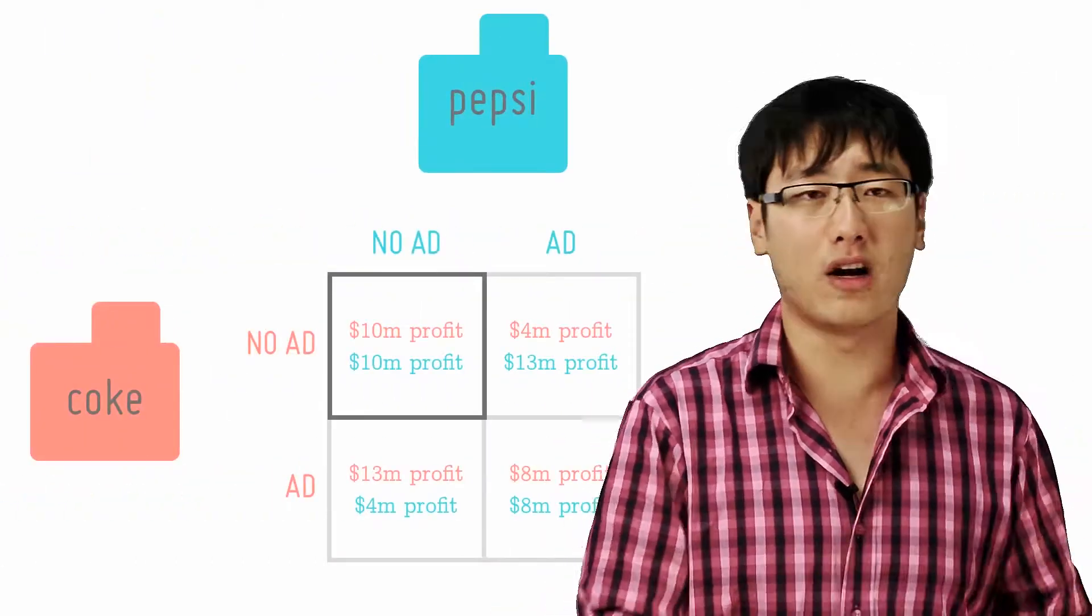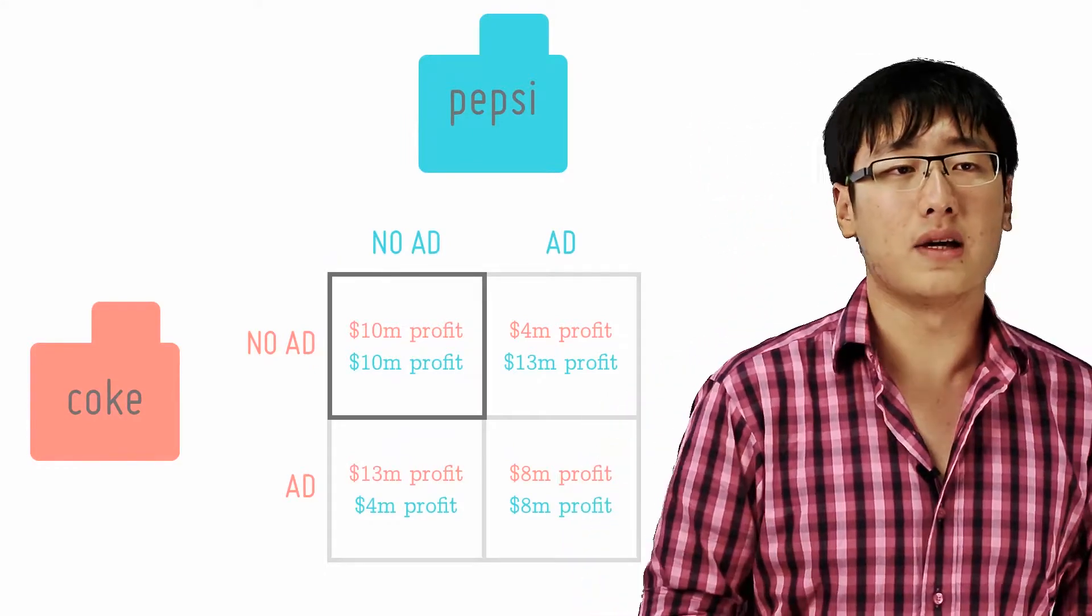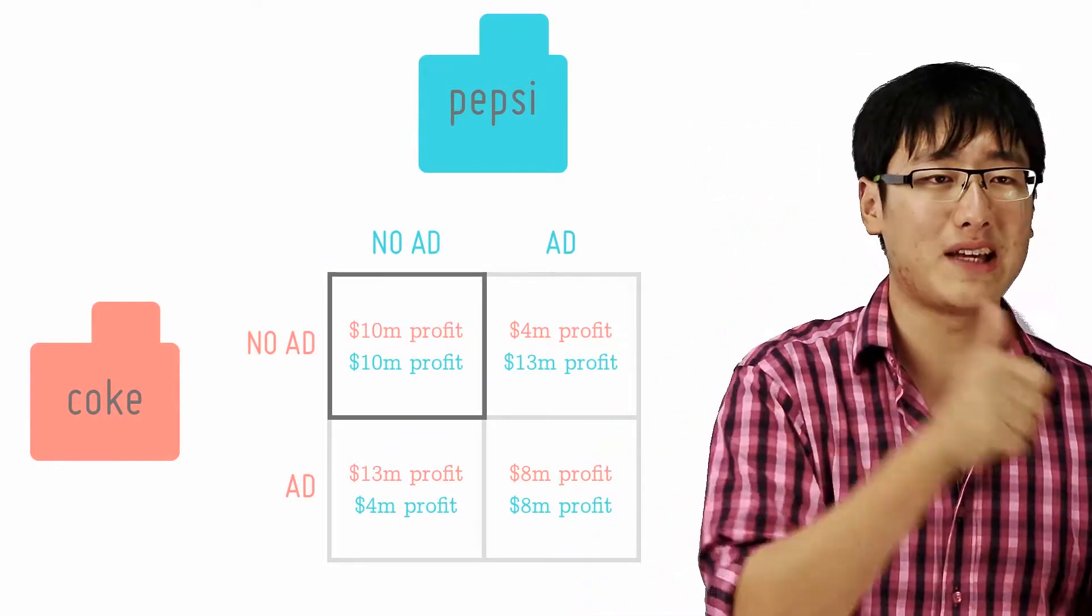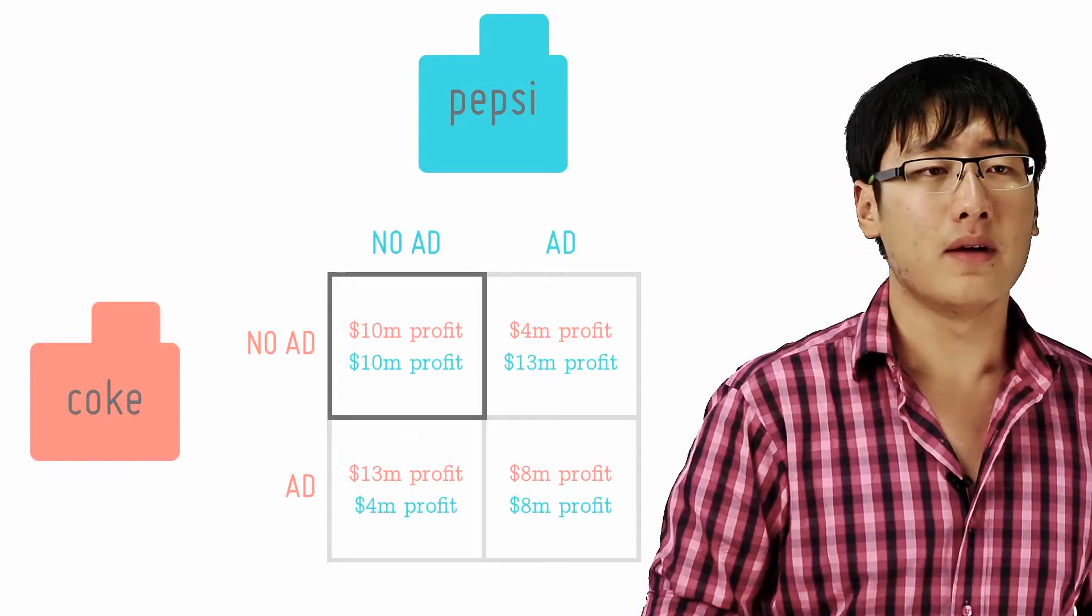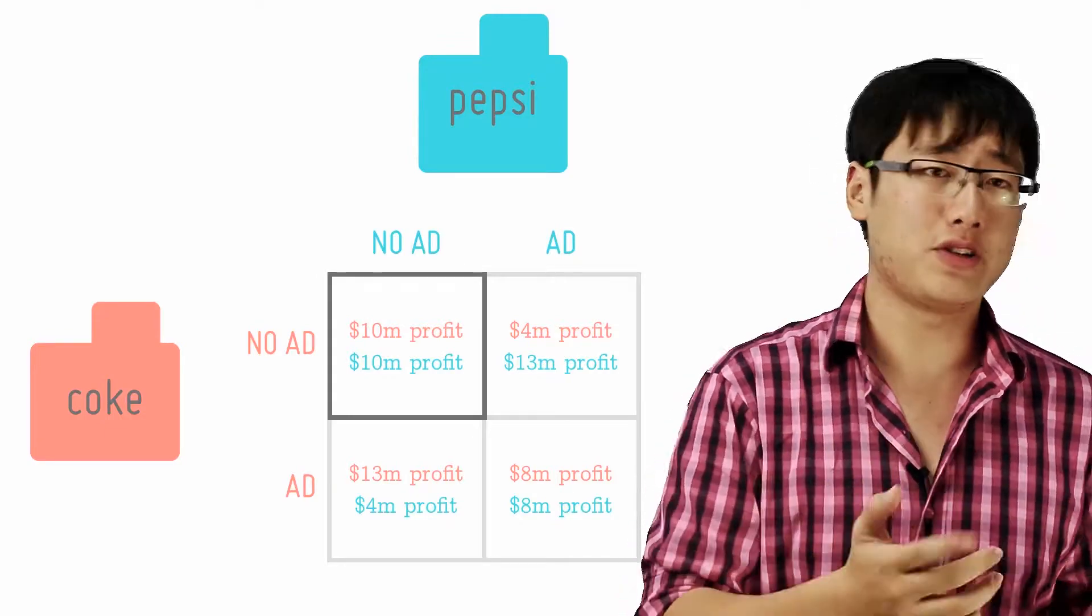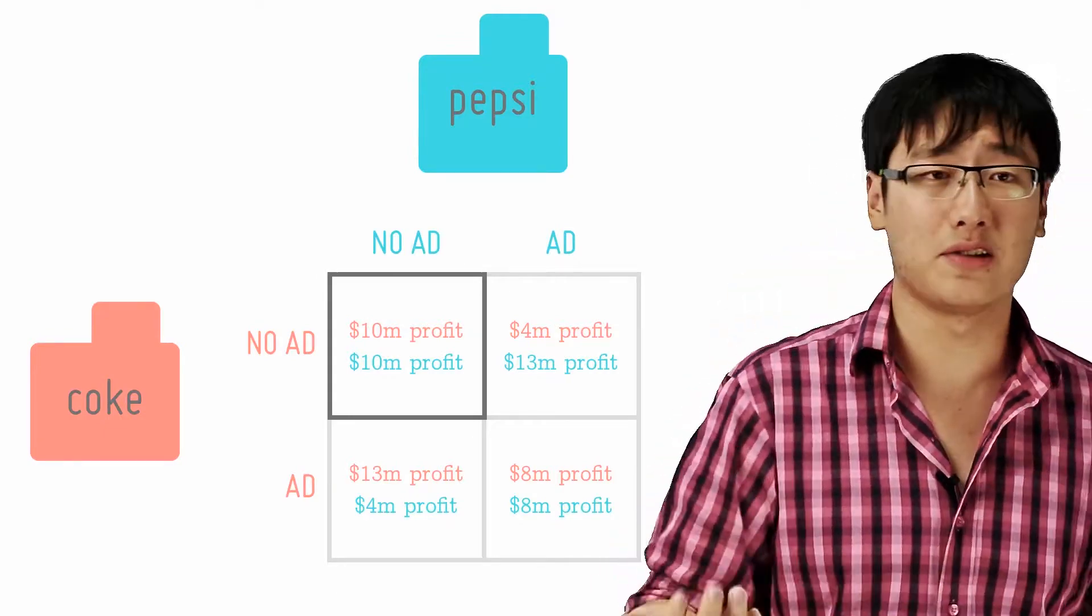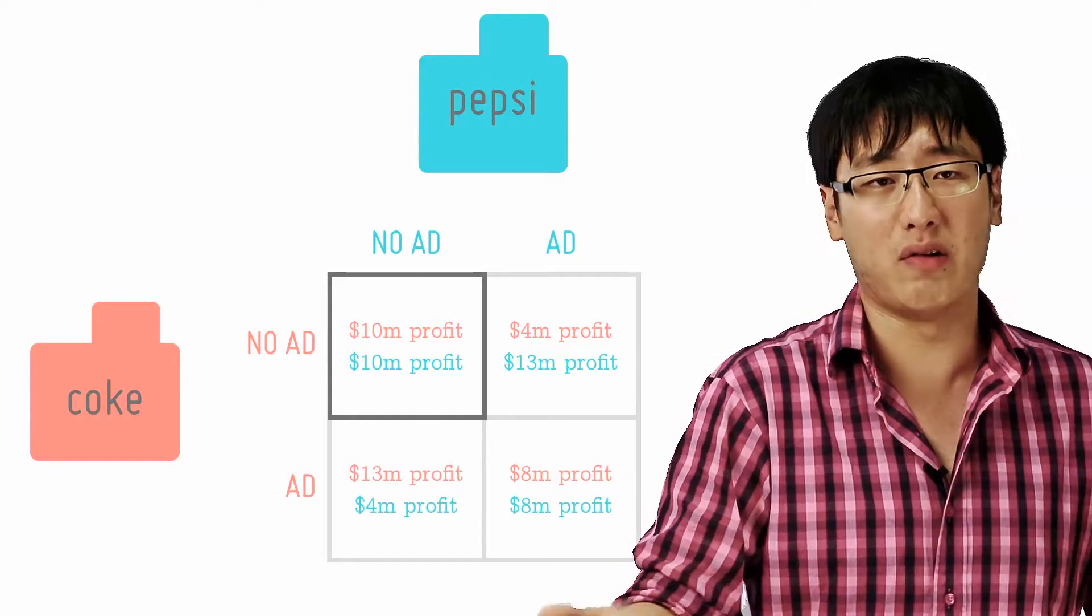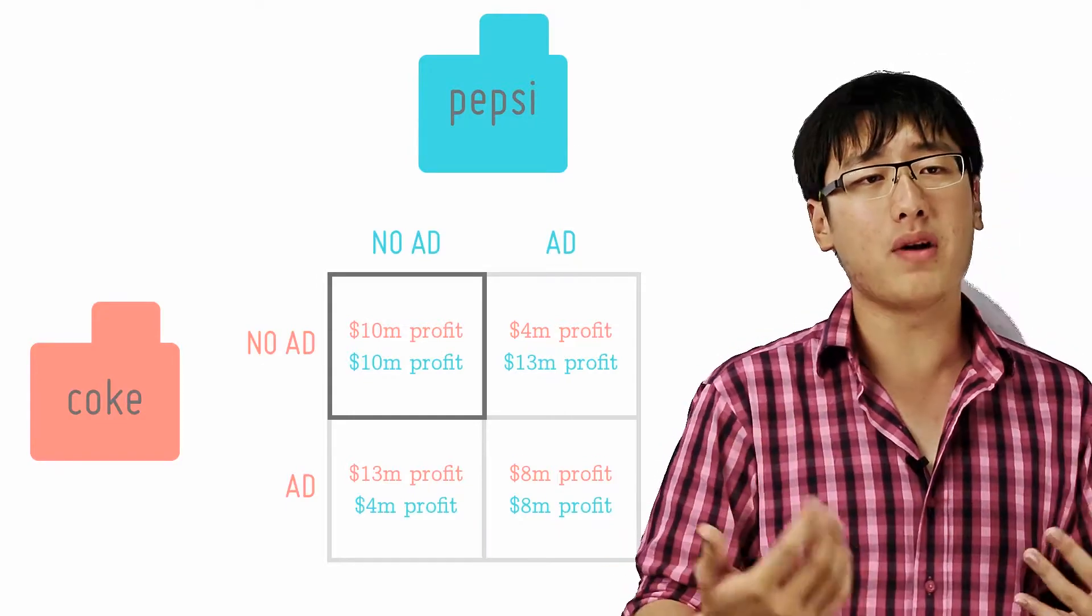Another example is when firms spend a lot of money on advertising. If they are aggressive and they do a lot of advertising to get ahead of their rivals, they can do that. If they're cautious as well, they do a lot of advertising too, just in case their rivals do advertising.